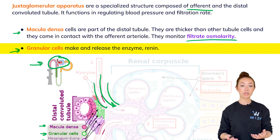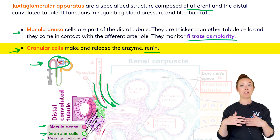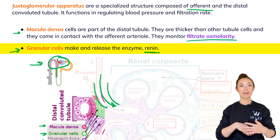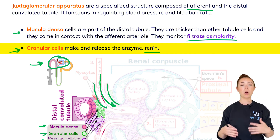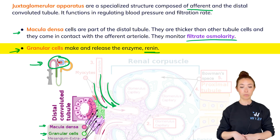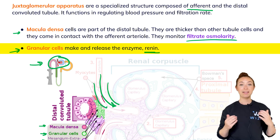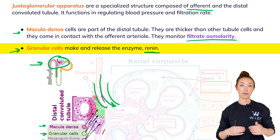There are also granular cells that are part of the JG apparatus and secrete renin, which is the first component in the renin-angiotensin system (RAS) cascade. When the RAS system is activated, it helps raise blood pressure and blood volume. That's it for this introduction to the nephron — let's now dive deeper into the different parts of the nephron and their functions.